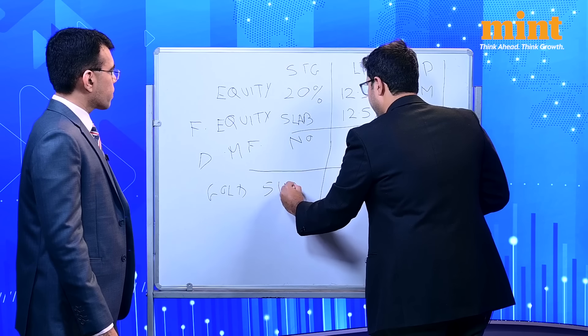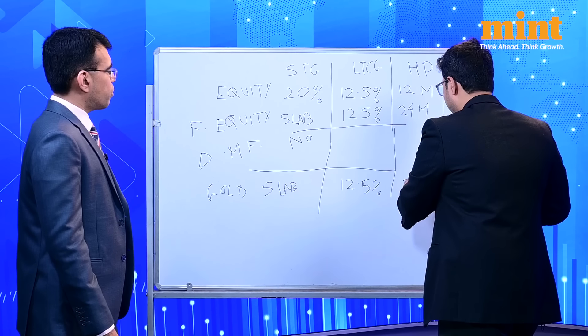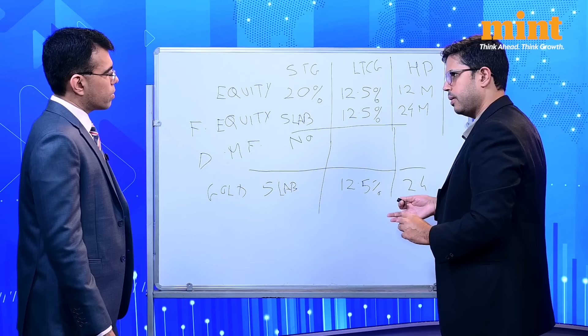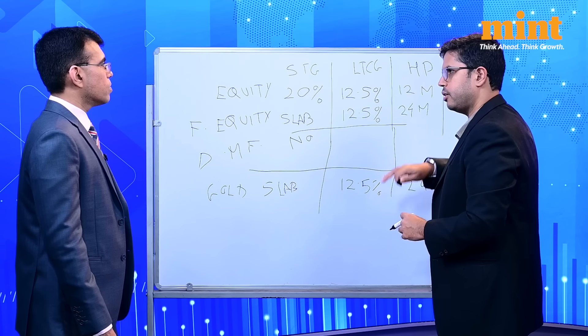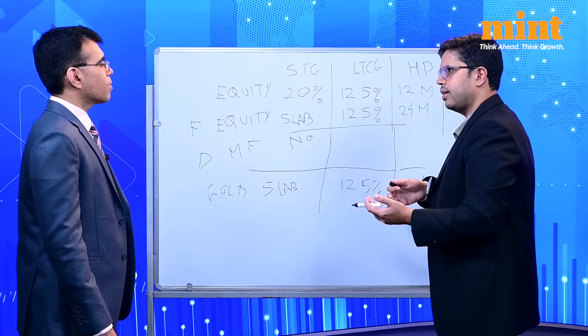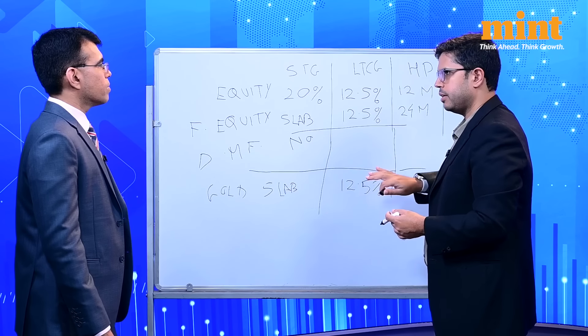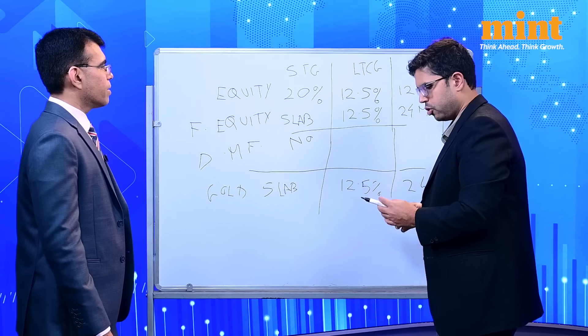So basically for gold, one is the holding period changes from 36 months to 24 months. And instead of 20% with indexation it becomes 12.5. So net-net whether 12.5 is better than 20 with indexation, depends on number of years of holding. With gold and foreign equity it is debatable. With real estate there is a clear-cut shocker. So we will talk about that now.